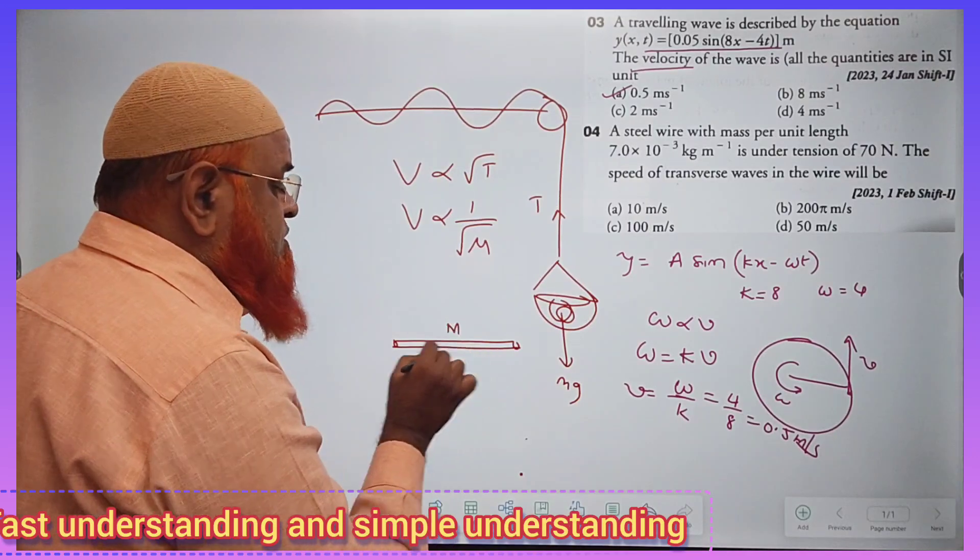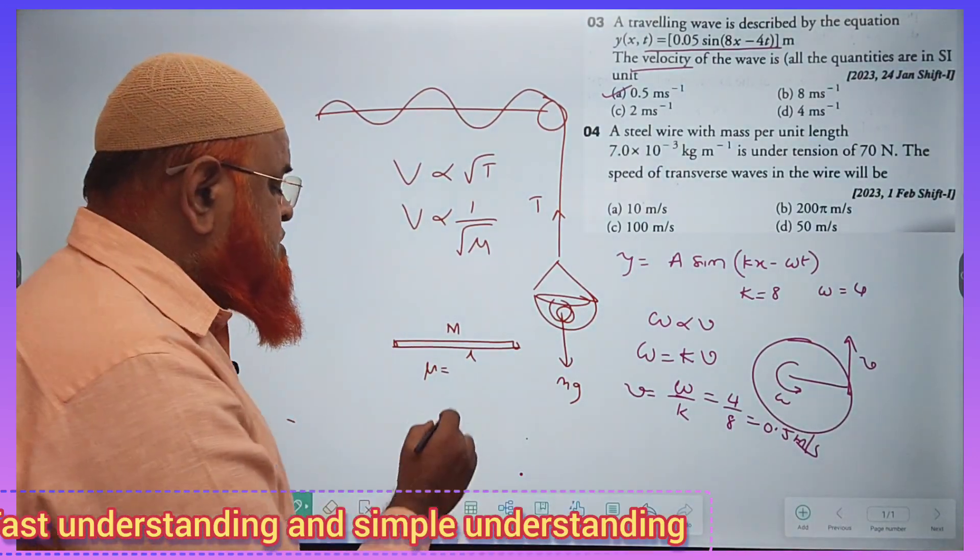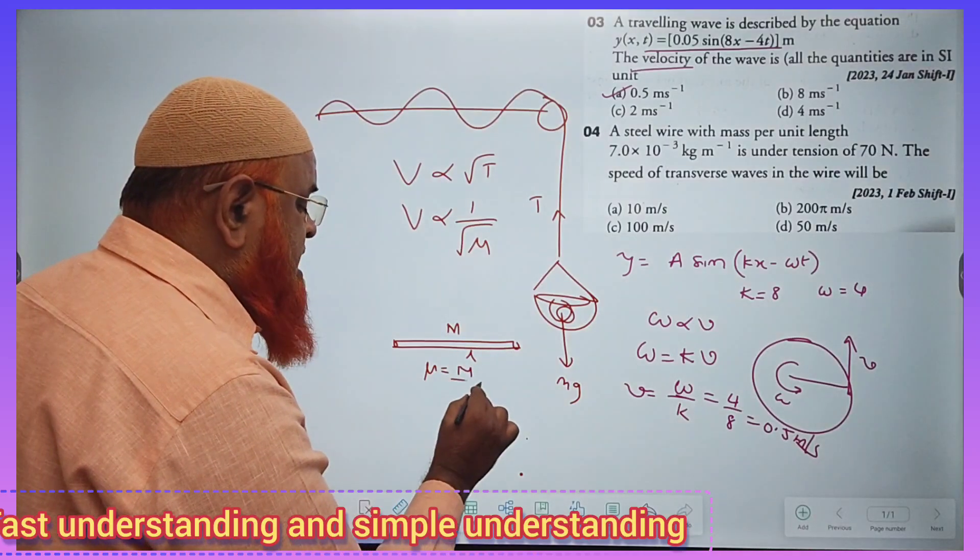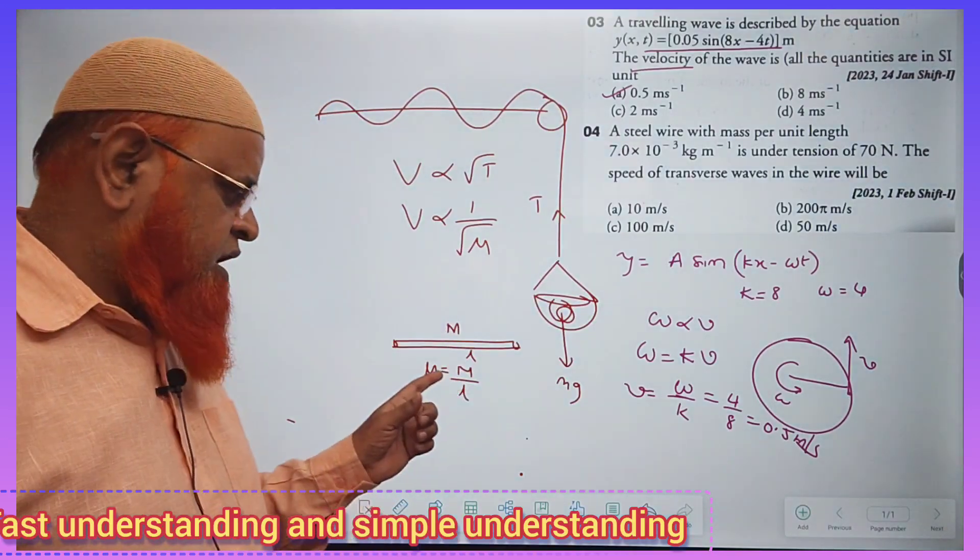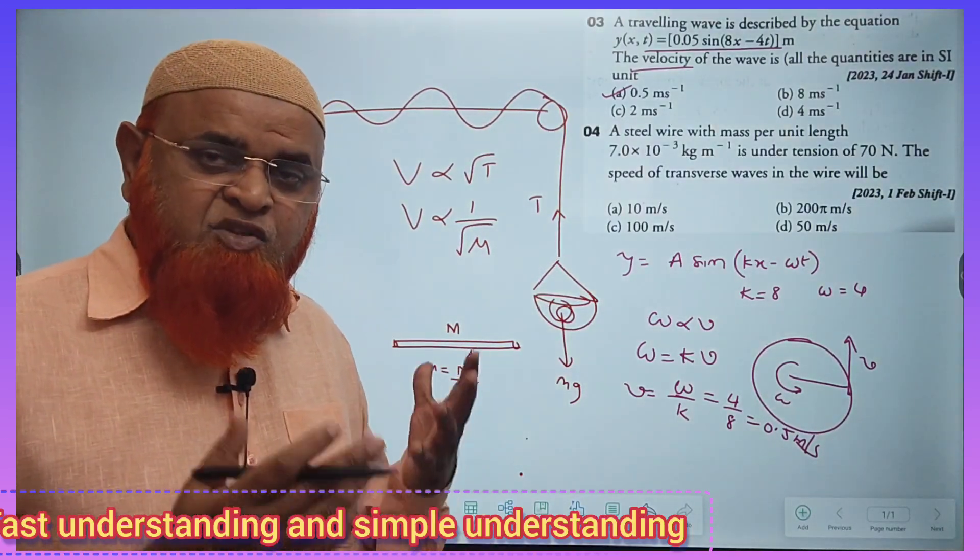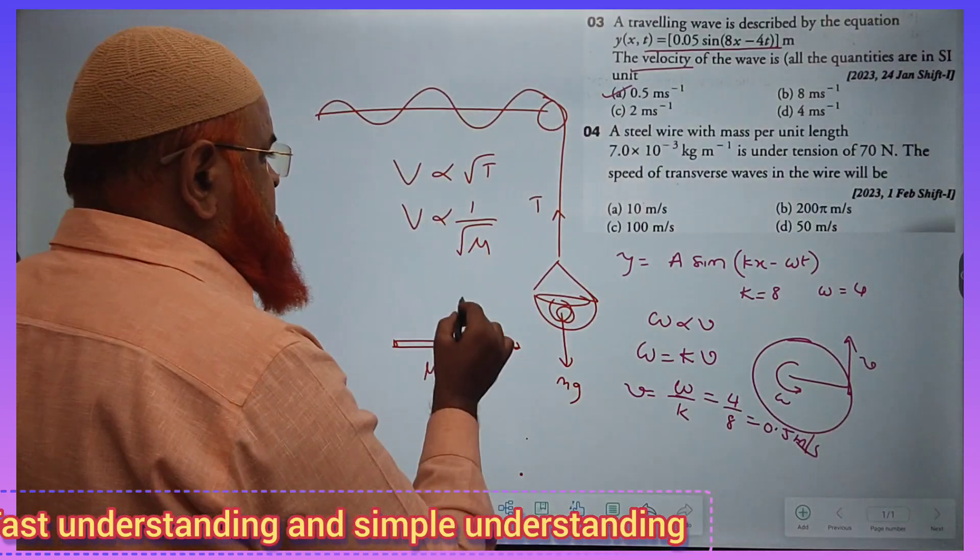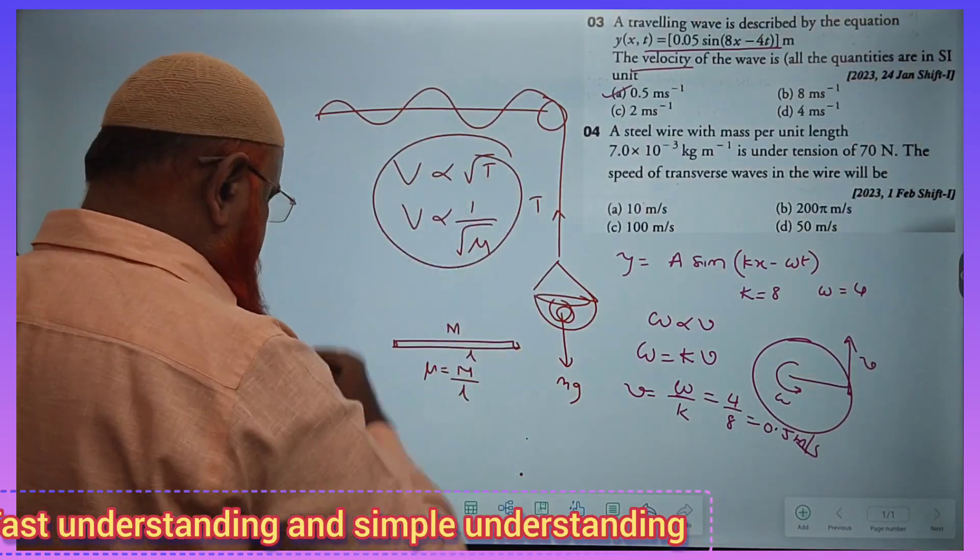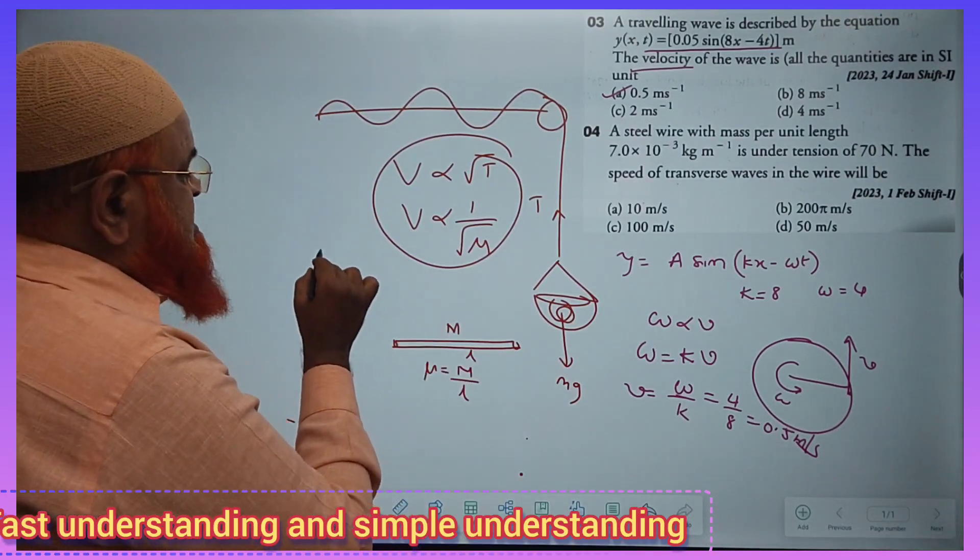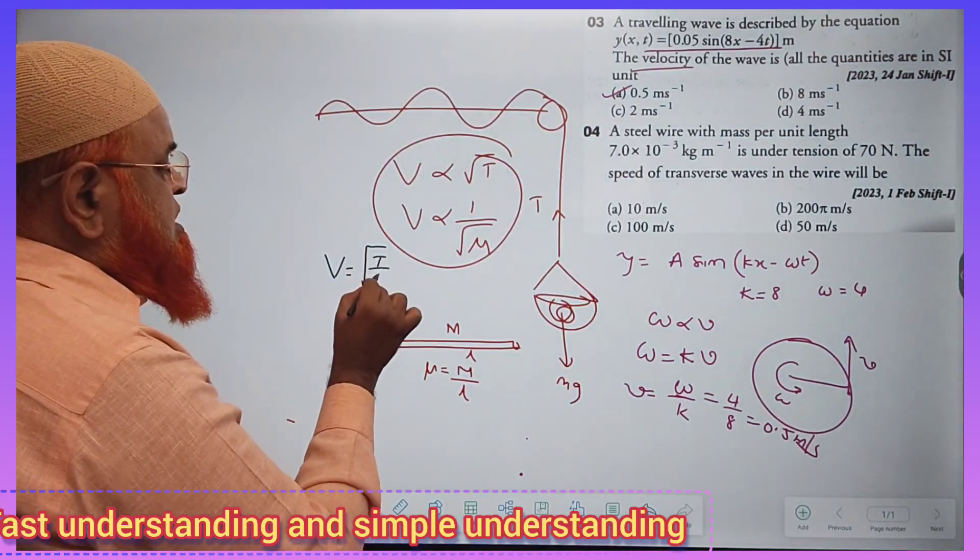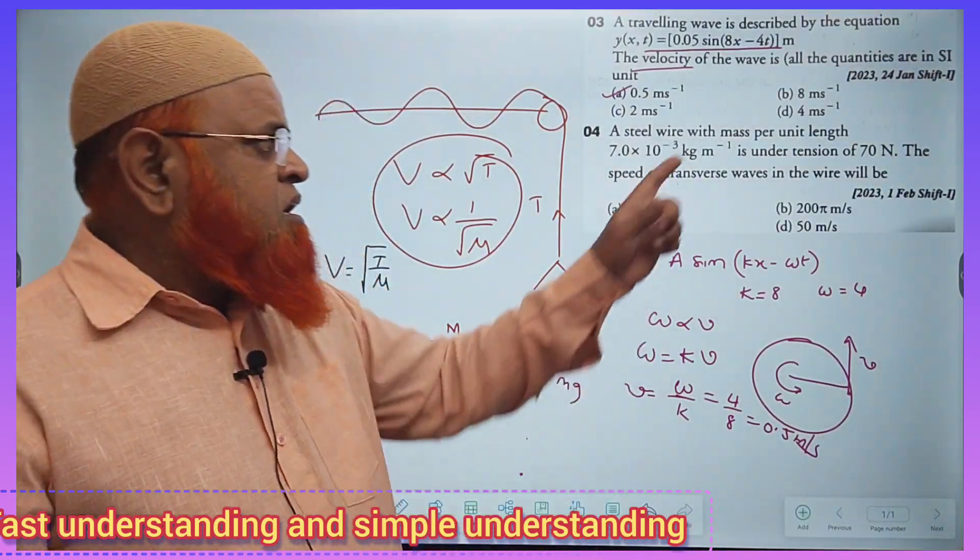Let us imagine the mass of the wire is M and length of the wire is L here. So linear density means mass by length. Mass per unit length, that is called linear density. So here it is understood that if you join these two, you will get that V = √(T/μ). That's it. V = √(T/μ).